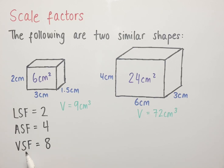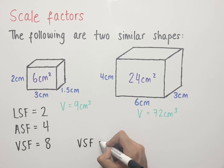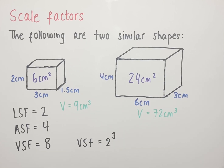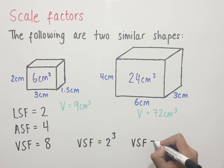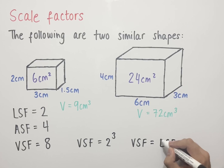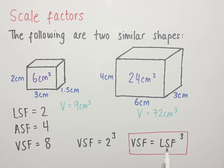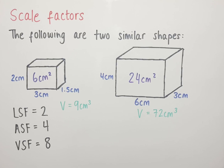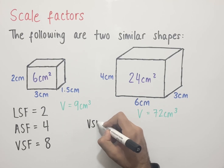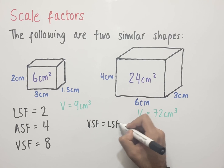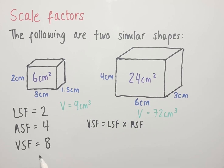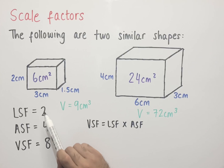The volume scale factor, which is 8, can be written as a multiple of 2: it is 2 to the power of 3. Since the length scale factor equals 2, we can write that VSF equals the length scale factor cubed, or VSF = LSF³. This relationship is true for any two similar shapes. Another relationship, less commonly used, is that the volume scale factor equals the length scale factor multiplied by the area scale factor. Here, 2 times 4 equals 8, confirming VSF = LSF × ASF.